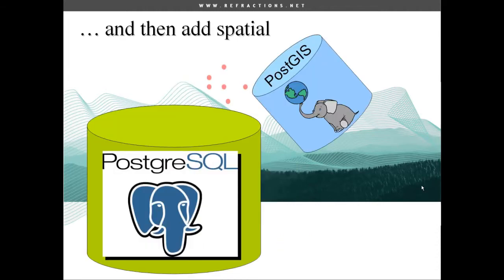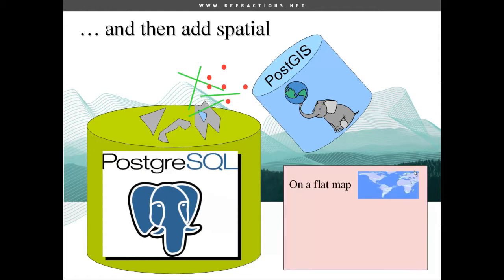What PostGIS adds to your database is the ability to store points, lines, and areas in the database, just as you would store a number or a date. These geometric objects might represent the location of geographic features such as rivers or roads, or they might represent more abstract concepts such as administrative boundaries or climate zones. And they can be referenced to either a flat map or a spherical globe.